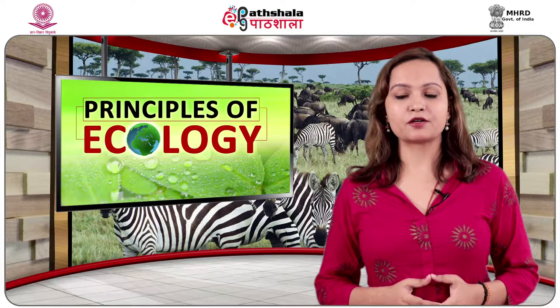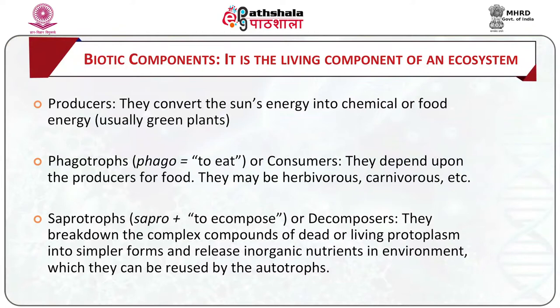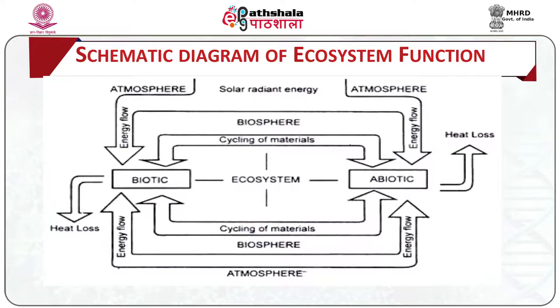Biotic components are the living components of an ecosystem and give the trophic level nutritional structure. The biotic component comprises producers, which convert the sun's energy into chemical or food energy — they are usually green plants. Phagotrophs (phago means to eat, i.e., consumers) depend upon producers for food or energy and may be herbivores, carnivores, etc. Saprotrophs (sapro means to decompose) are decomposers — they break down complex compounds of dead or living protoplasm into simpler forms and release inorganic nutrients into the environment which can be reused by autotrophs. They are also referred to as micro-consumers and chiefly include bacteria, actinomycetes and fungi.